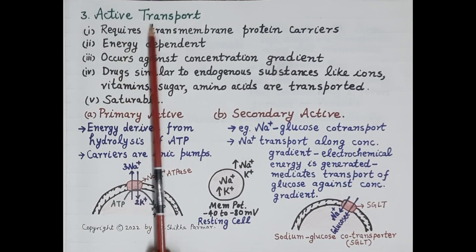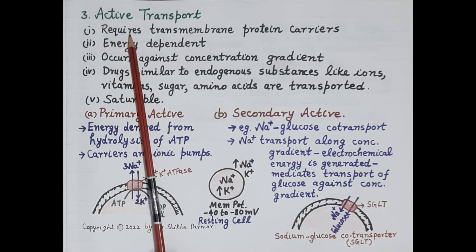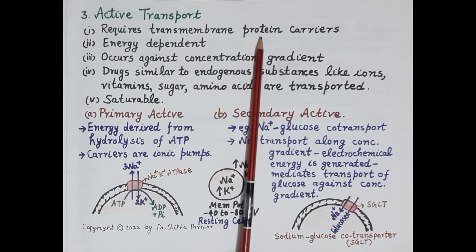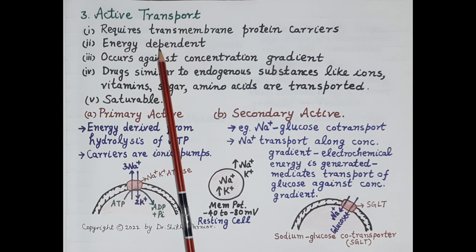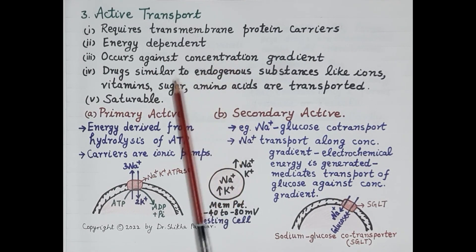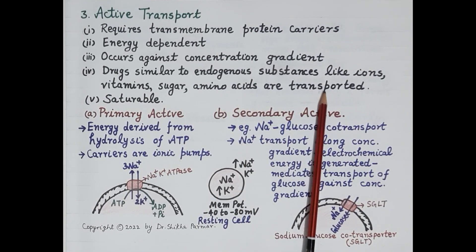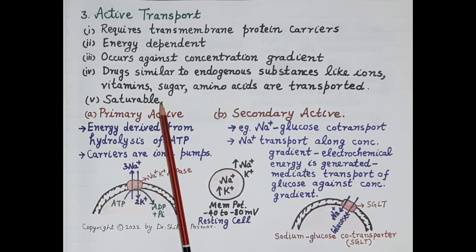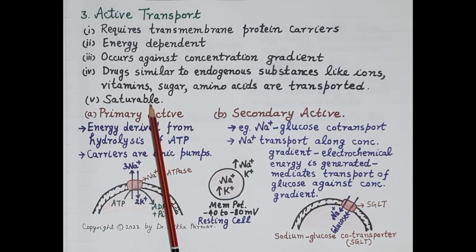The third type is active transport. It is termed as active because transportation of drug across the cell membrane requires energy, and it requires special carrier molecules called transmembrane proteins. Transportation usually occurs against the concentration gradient — from lower to higher concentration. Drugs similar to endogenous substances like ions, vitamins, sugars, and amino acids are transported by active transport. Since transportation depends on availability of carriers, the process is saturable and cannot occur in the absence of carriers.